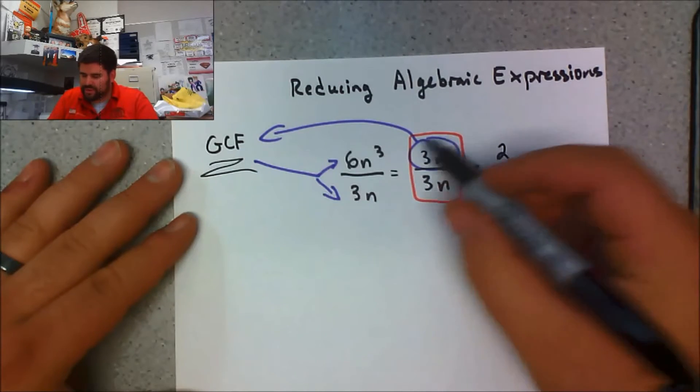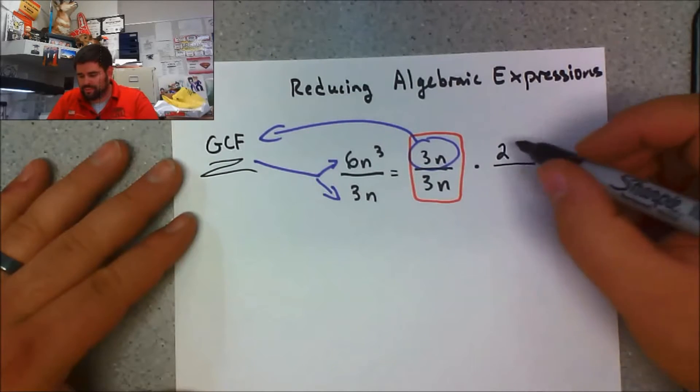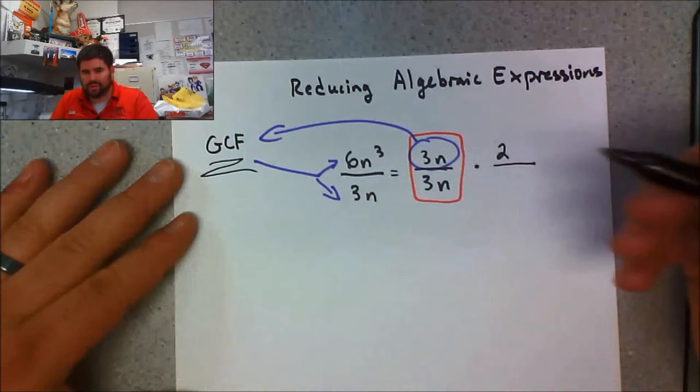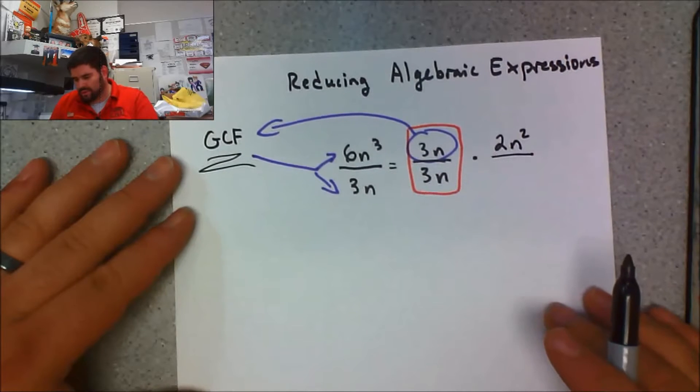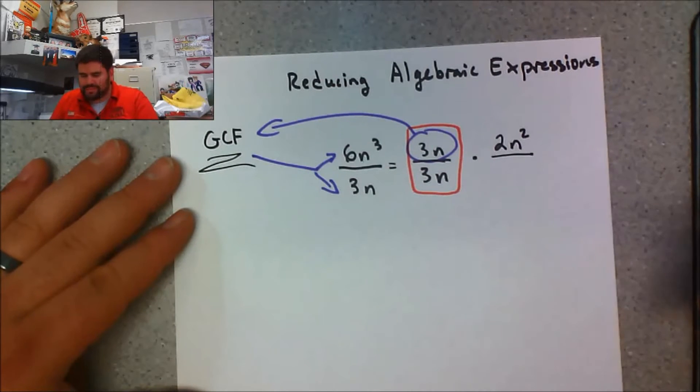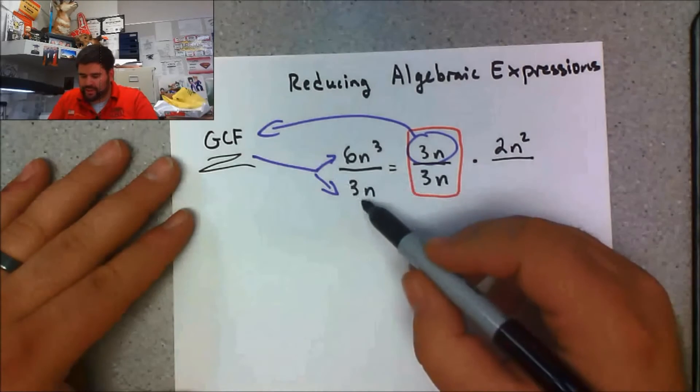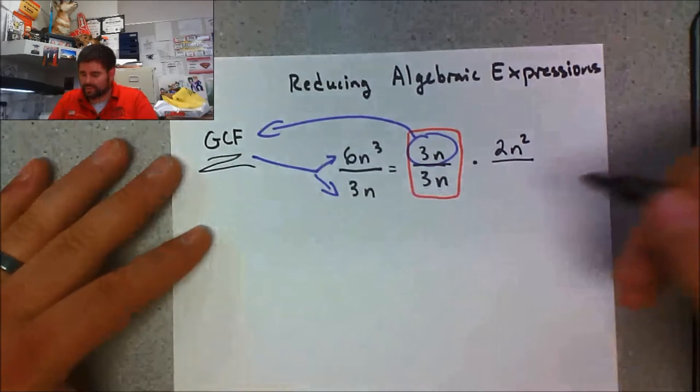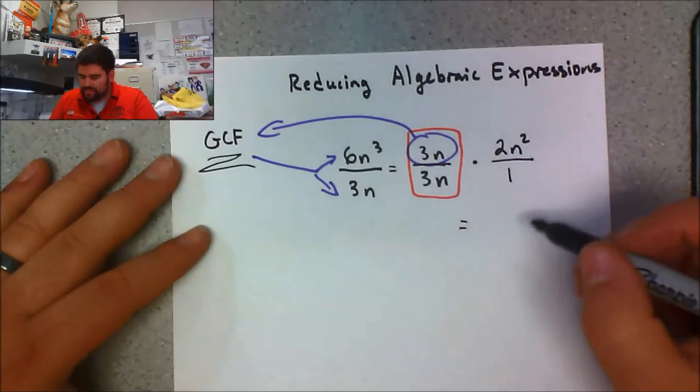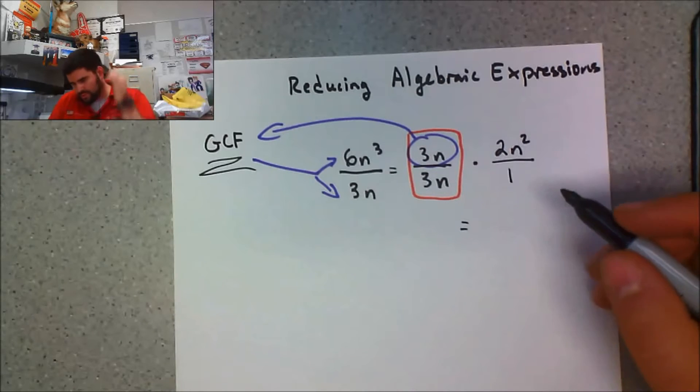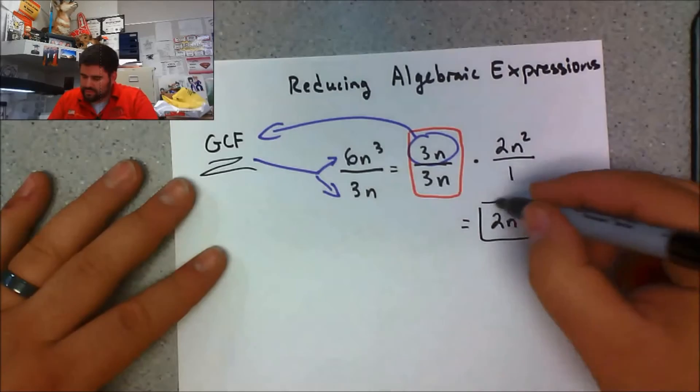Well, if I multiply 2 by 3, I get 6. Then I ask, what do I need to multiply N by to get N cubed? They say you need N squared, Mr. Anderson. Okay, cool. What happens on the bottom? What do I multiply 3N by to get 3N? Well, that's just 1. So the reduced form for my answer is 2N squared.